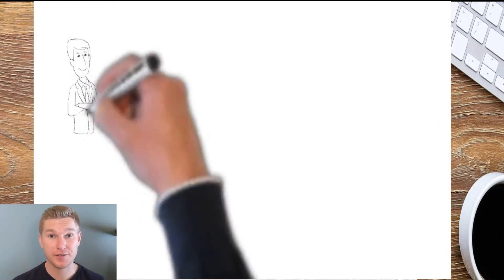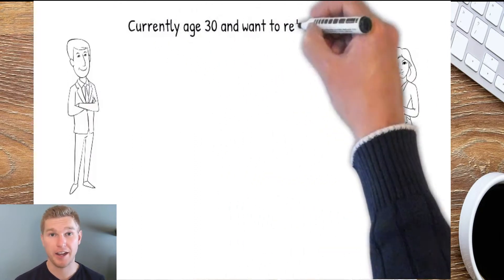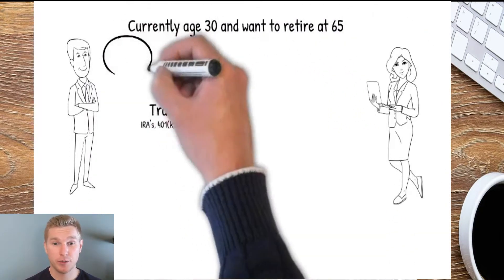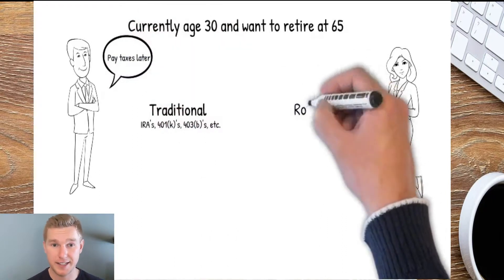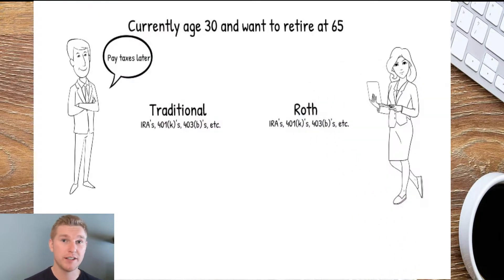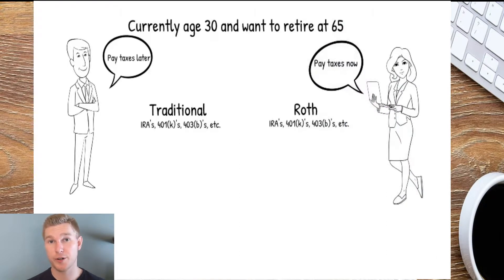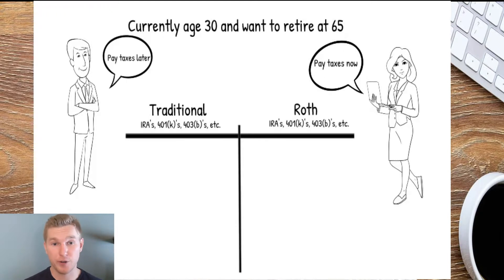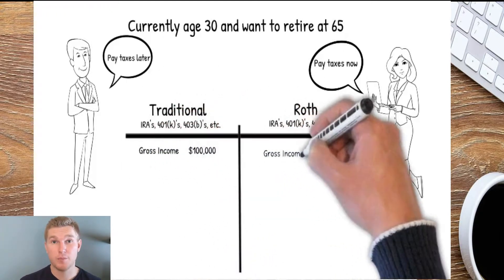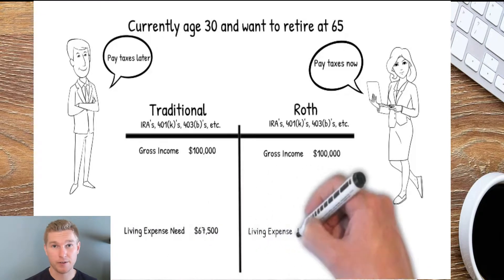Here's the story of two best friends, Tom and Rachel. They're both 30 years old and wish to retire at age 65. Both Tom and Rachel make $100,000, and after doing detailed budgets they find that their living expenses are both $67,500.